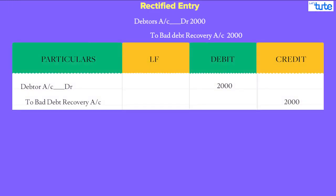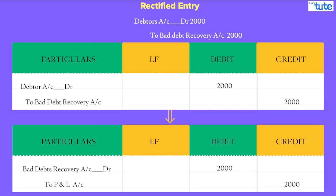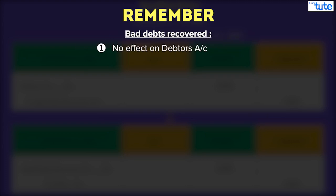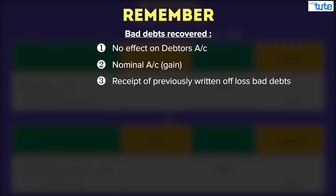Since debtor's account is debited, add 2,000 to debtor's, which had been wrongly credited when the recovery amount was posted to that account. And bad debts recovery account will be credited, which is actually a gain and will be transferred to the profit and loss account in final accounts adjustment. So remember, bad debts recovered will have no effect on your debtor's account. Rather, it is accounted for separately as a gain, which is the receipt of a previously written-off loss.